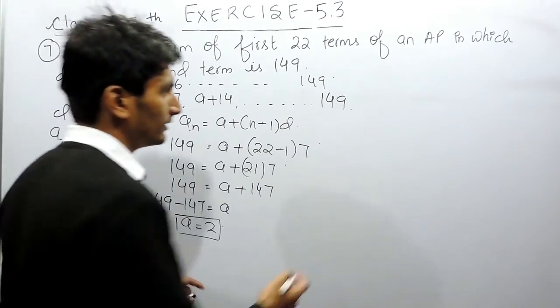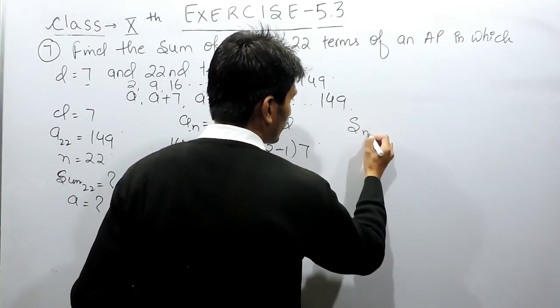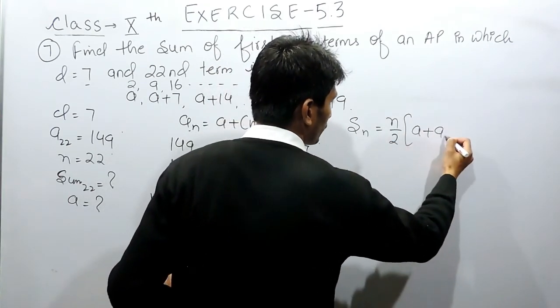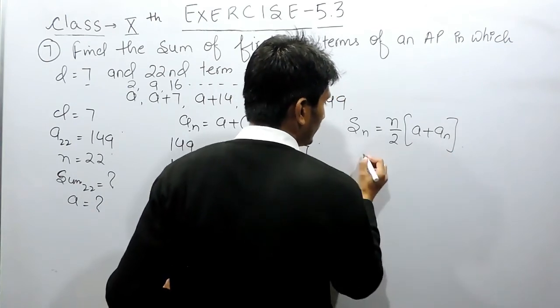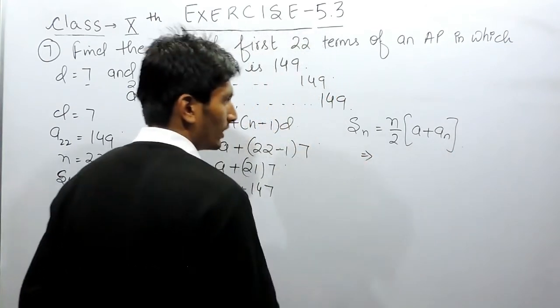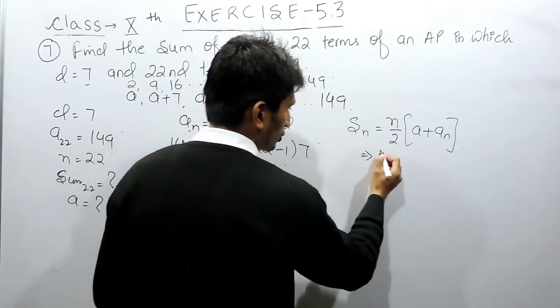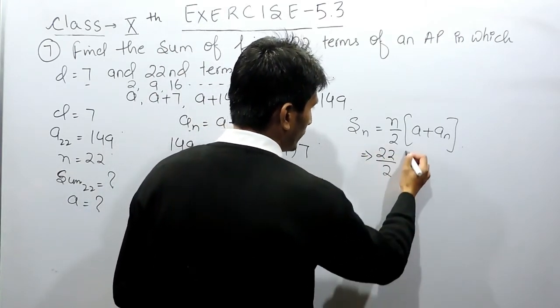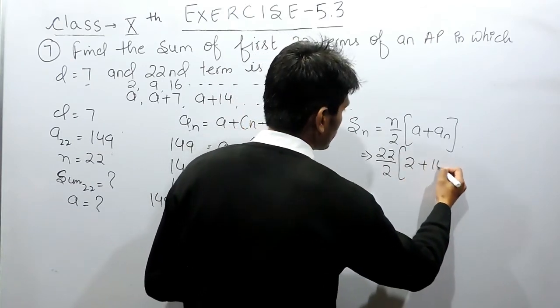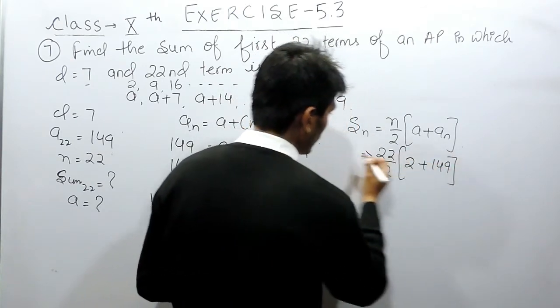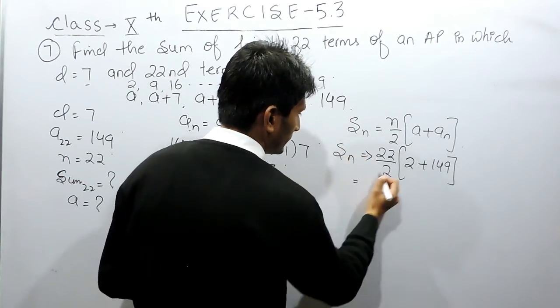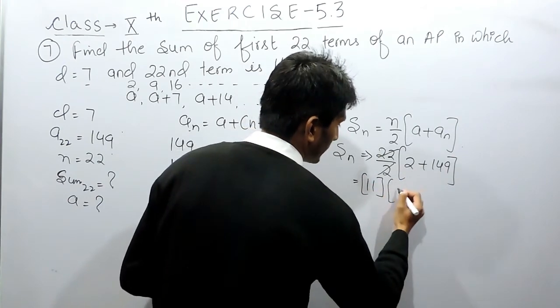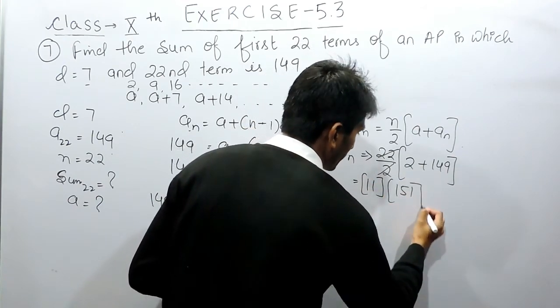There is a formula to find the sum of an AP if I know the first and last term, which will make my calculation easy. The sum of n terms is S_n = n/2 × (first term + last term). So the number of terms is 22/2, and this becomes 11 times (2 + 149), which is 11 times 151.